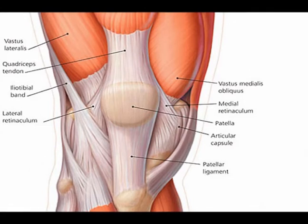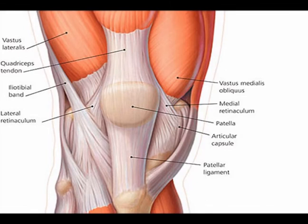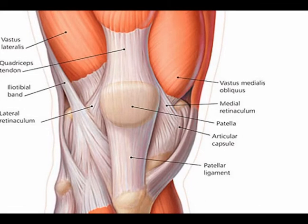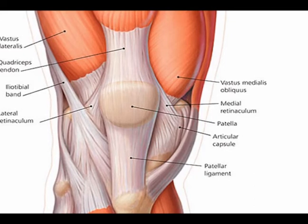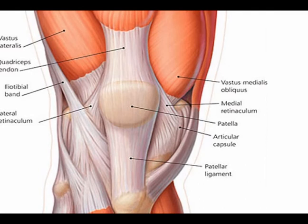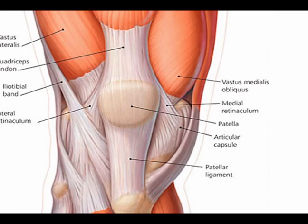All four of these muscles insert into the patella. The tendon that is superior to the patella is called the quadriceps tendon. And when the tendon is inferior to the patella, it is known as the patellar tendon. The patellar tendon inserts into the front part of the top of the tibia in a spot called the tibial tuberosity.